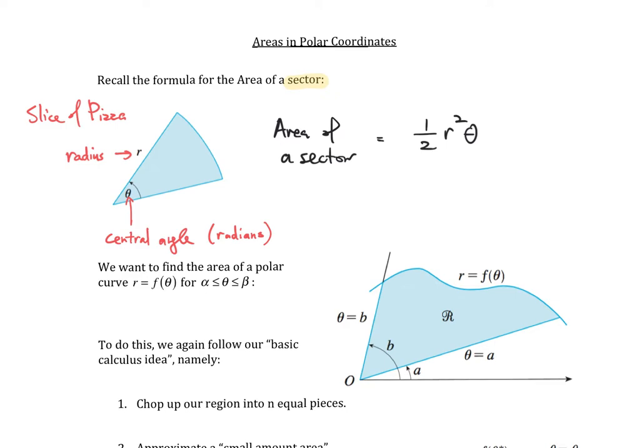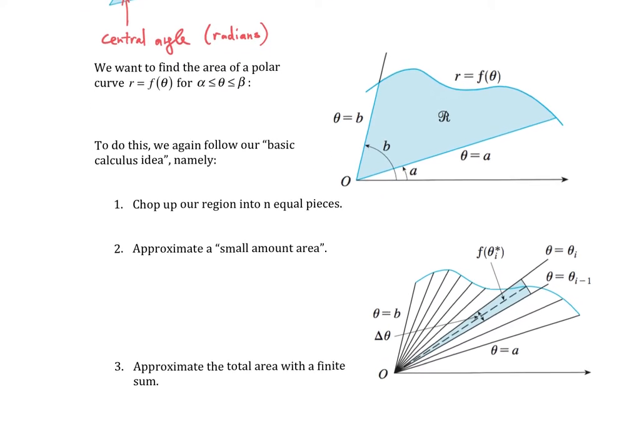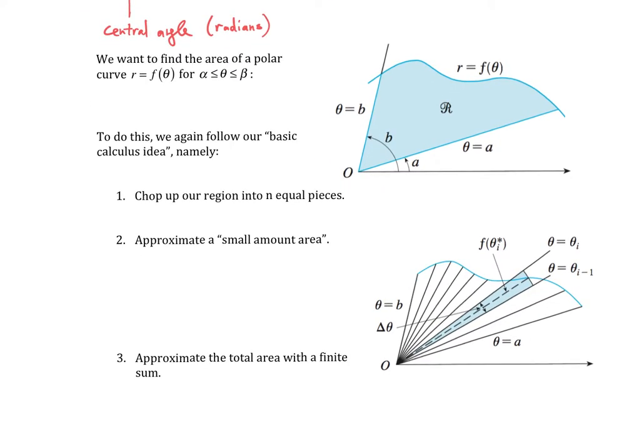We are going to try to find a formula for the picture that we see on the right. We have some polar curve r equals f of theta. Our region of integration is going to be two different angles of theta, theta equal to a and theta equal to b, and this region is what we're trying to find the area of.